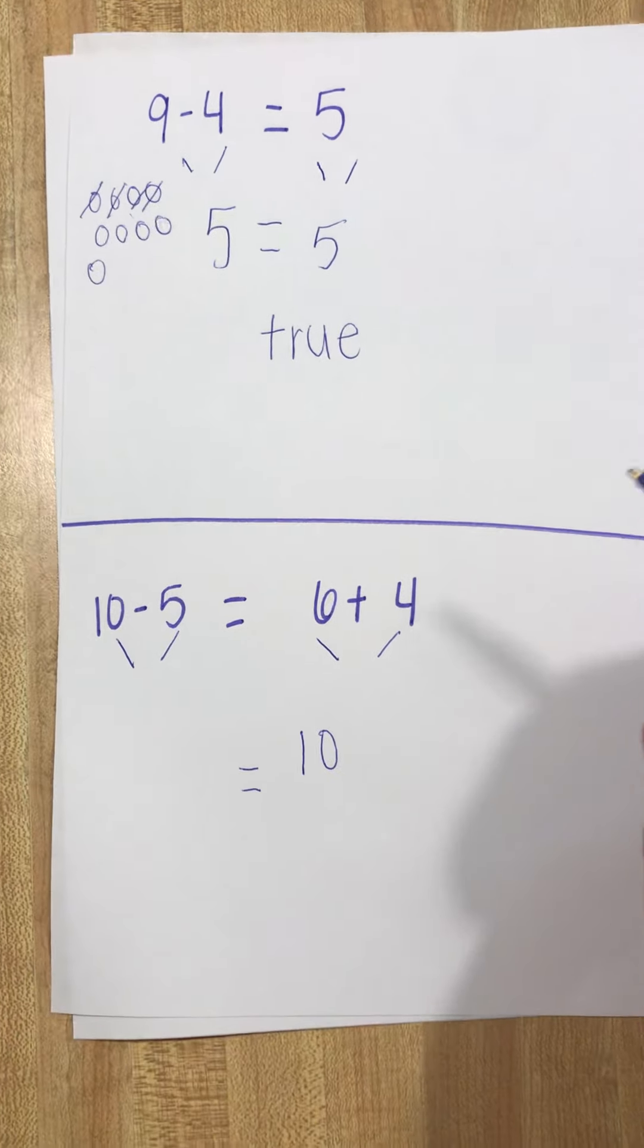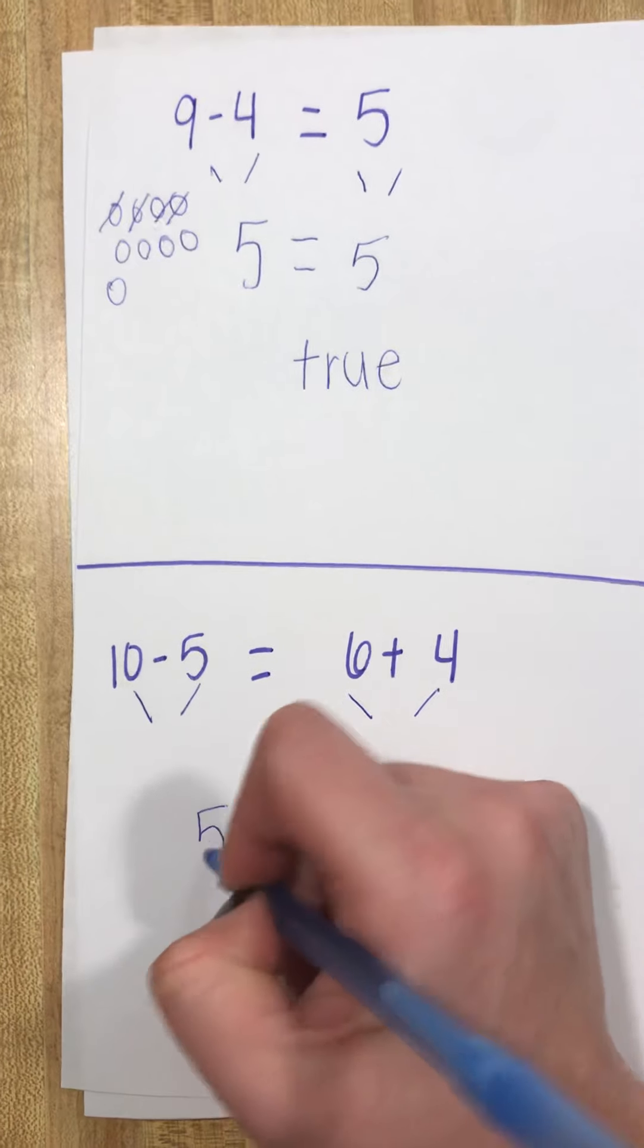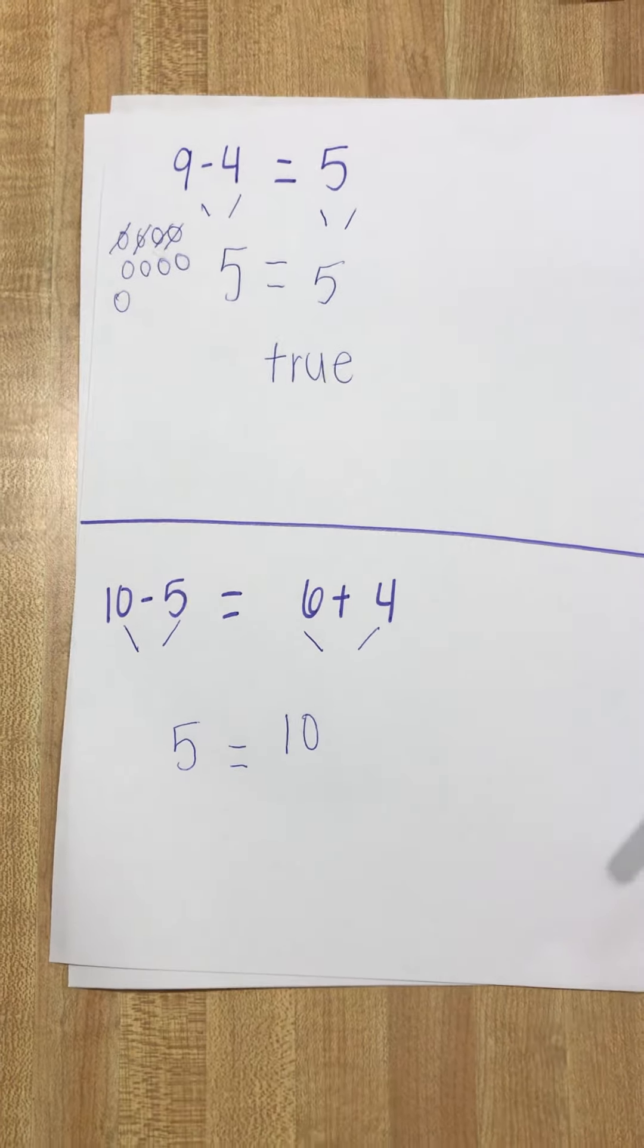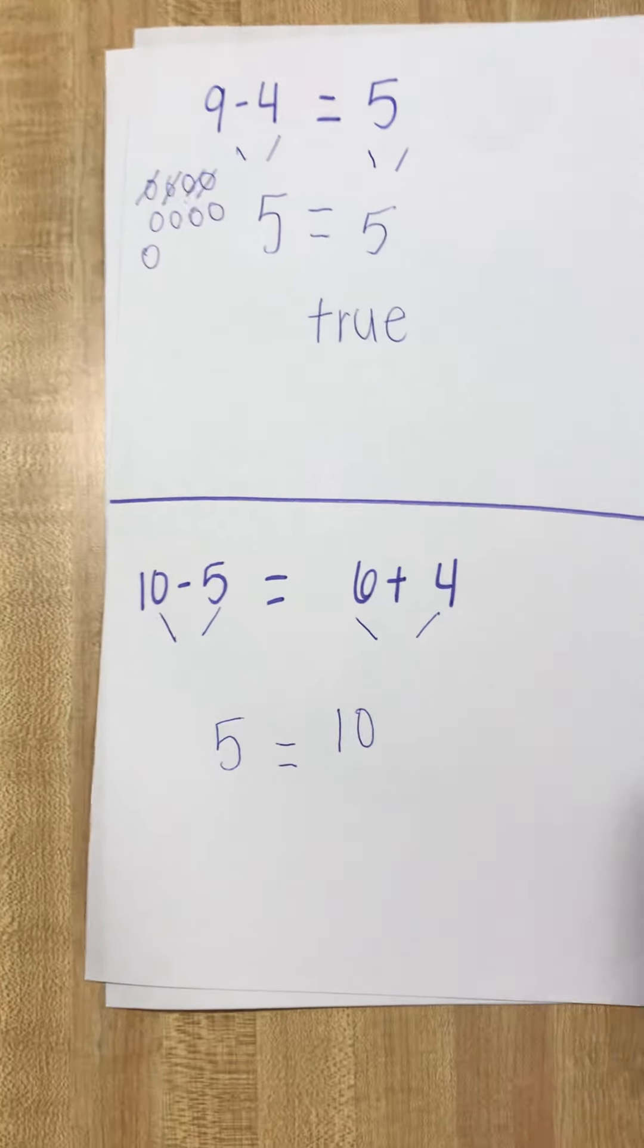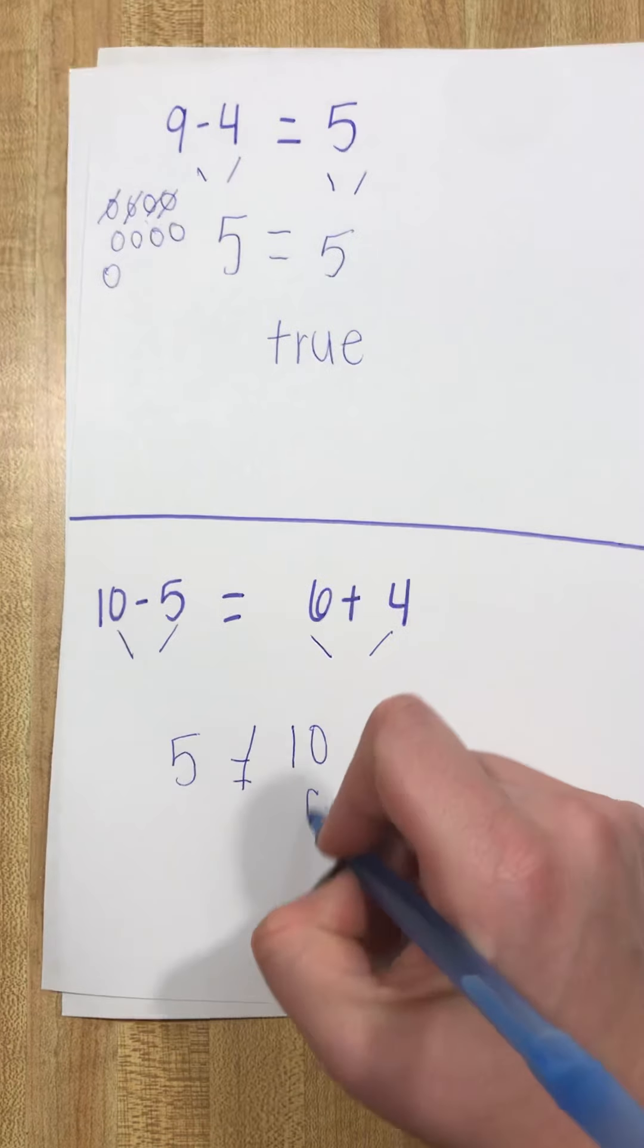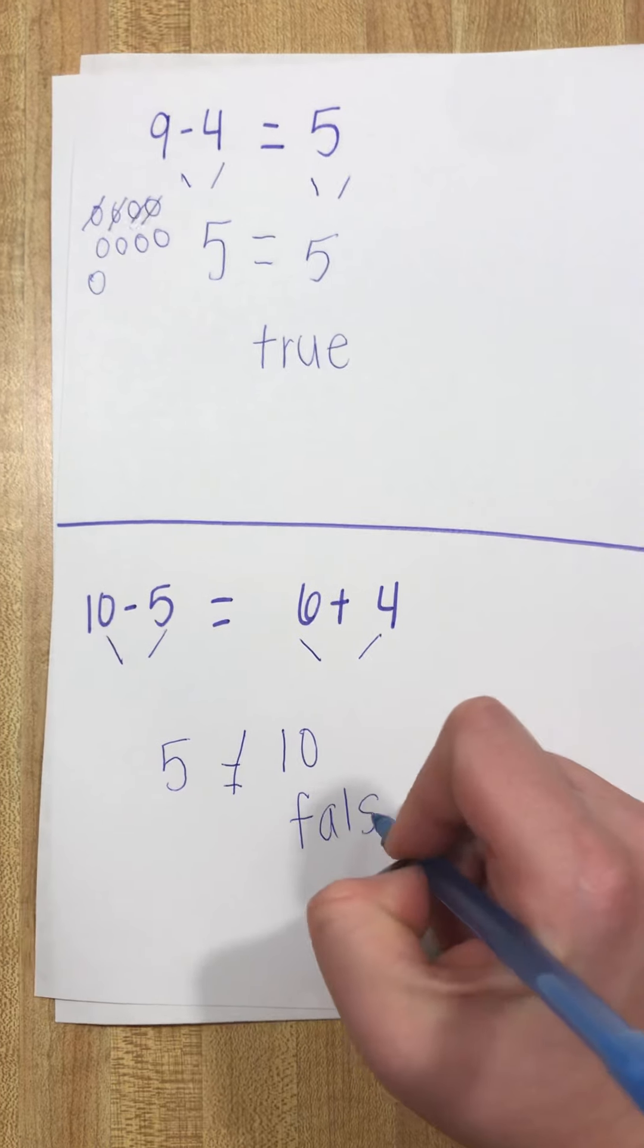Ten minus five. Again, maybe we know our doubles facts. We know the opposite of five plus five is ten minus five. So five does not equal ten. So this one is false.